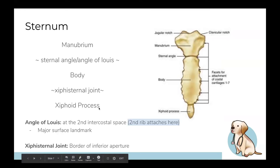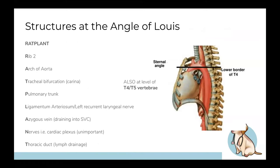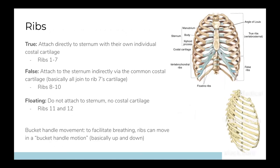Key point: angle of Louis equals second intercostal space. If you cut across your body at the sternal angle it's called the transthoracic plane. This plane is at the level of the T4/T5 vertebra - so anteriorly it's the second rib and posteriorly it's T4/T5. This is because ribs curve around and down rather than going in a straight line. There are many important structures at the angle of Louis which we'll come back to once we've covered more content.